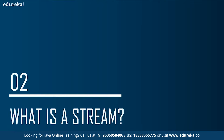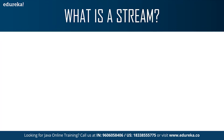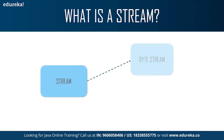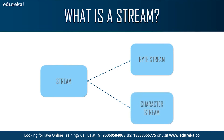Java uses the concept of stream to make input and output operations on a file. A stream is a sequence of data. It can be of two types: byte stream and character stream. Byte stream mainly incorporates byte data — when an input and output process happens with byte data, it is called the file handling process with byte stream. Character stream incorporates characters — when an input and output process happens with a character, it is called the file handling process with character stream.